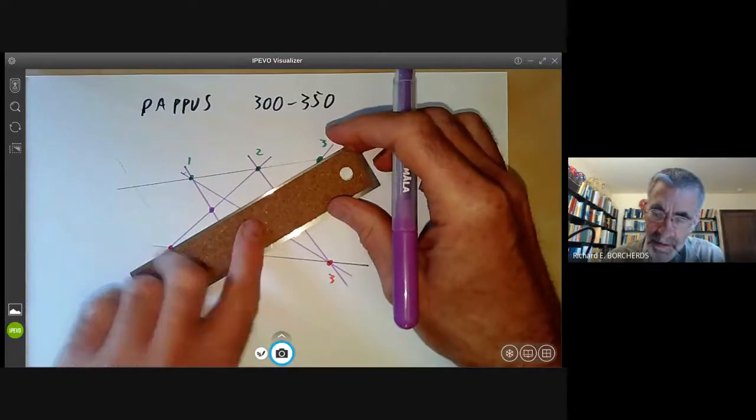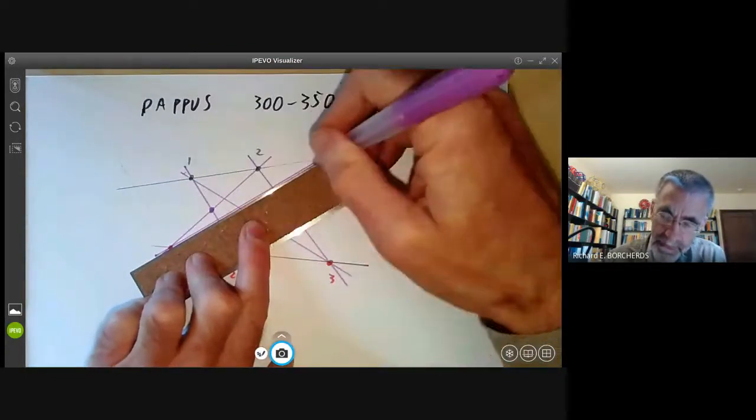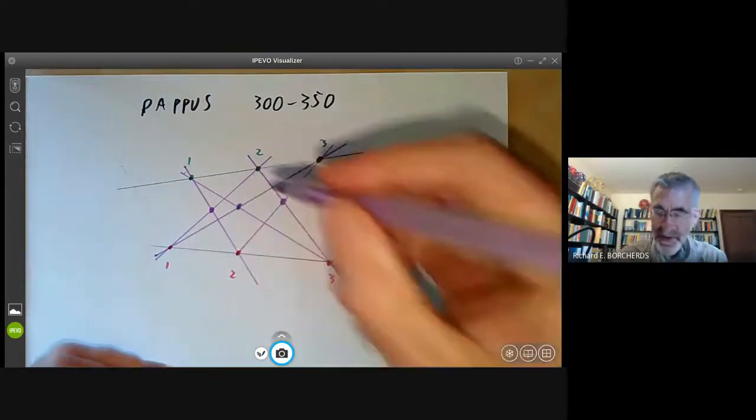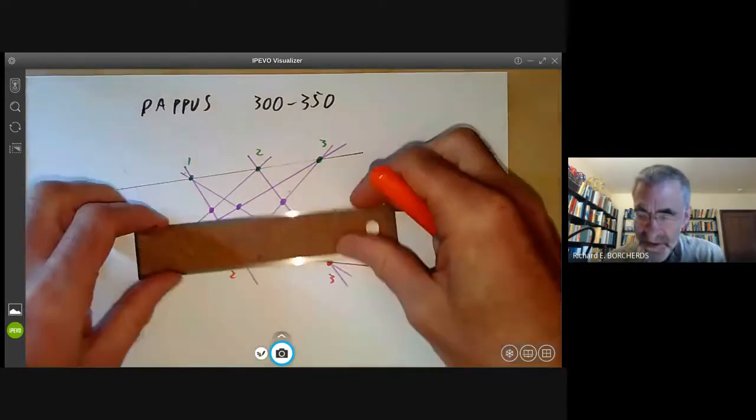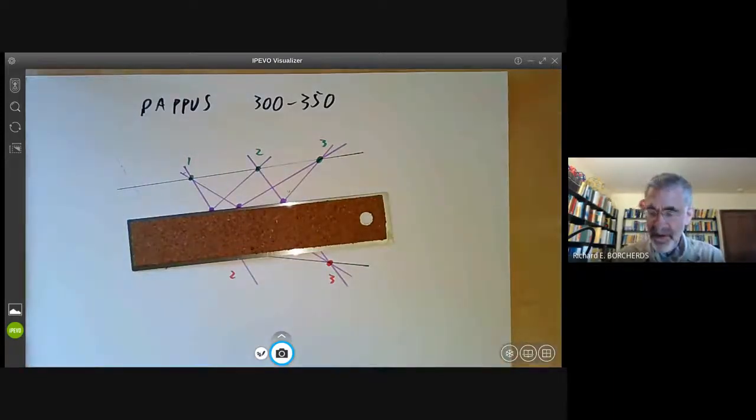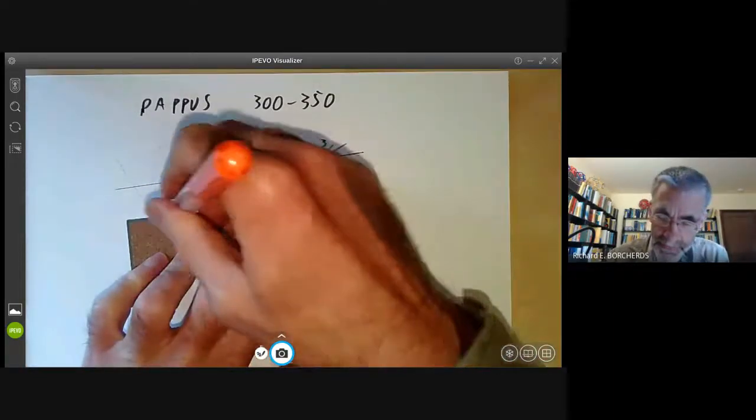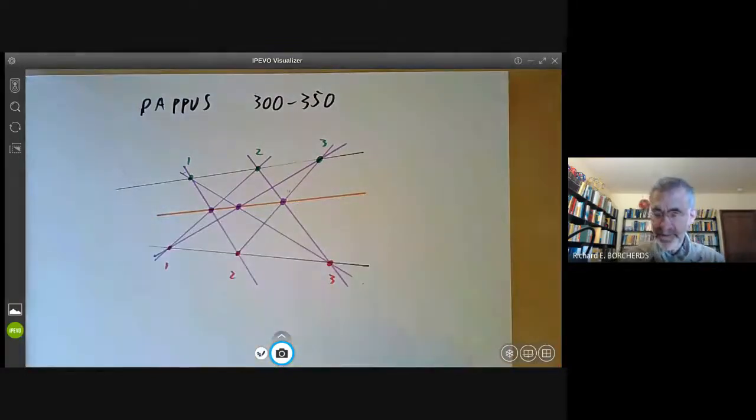And now what you do is you look at these three intersection points. And Pappus's rather astonishing theorem says that if I've drawn this accurately enough, these all lie on a straight line. And if you try and prove it using methods of Euclidean geometry, you'll find it's not actually all that easy. It's not too difficult to prove using coordinate geometry. Coordinate geometry wasn't invented until about a thousand years after Pappus lived, though. So I guess he had some other way of proving it.